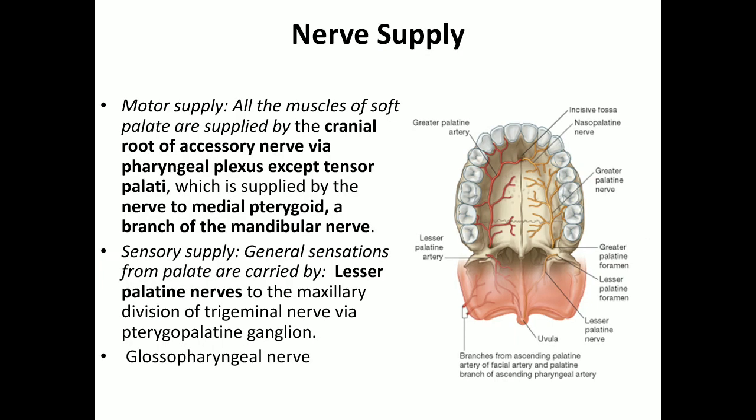All muscles of the soft palate are supplied by the pharyngeal plexus via the cranial part of the accessory nerve, except the tensor veli palatini, which is supplied by the nerve to medial pterygoid, a branch of the mandibular nerve. The sensory supply is by the lesser palatine nerve and the glossopharyngeal nerve.